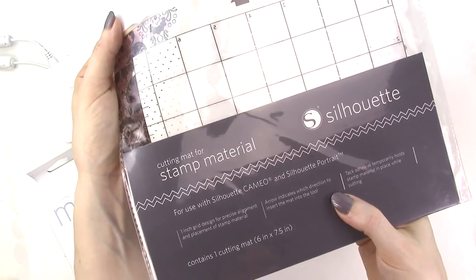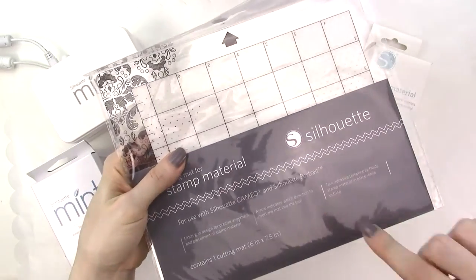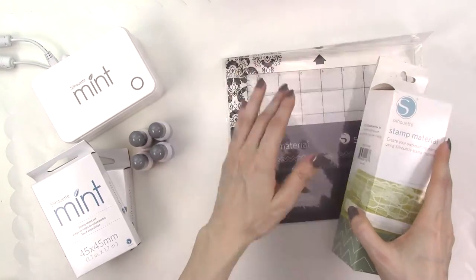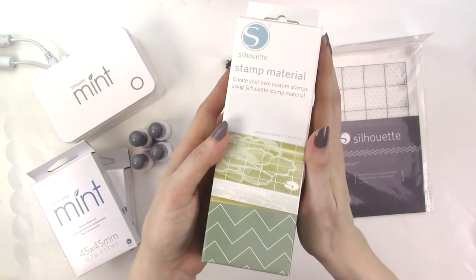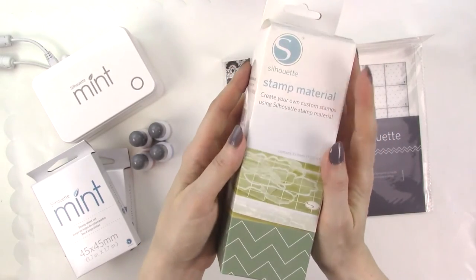You can purchase a stamping starter kit for about $30 and this includes three sheets of the stamping material, the special mat that you need to cut the stamping material, plus acrylic stamp blocks, an ink pad, 10 exclusive stamp designs, and an instructional DVD.